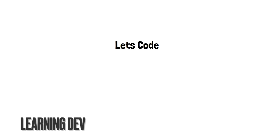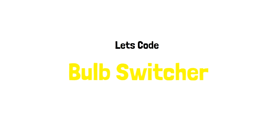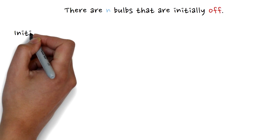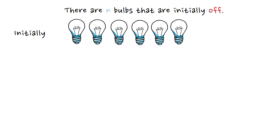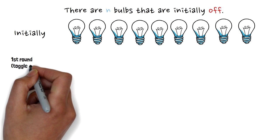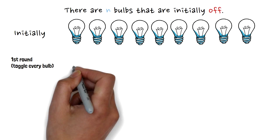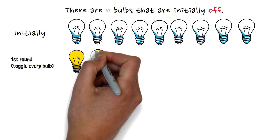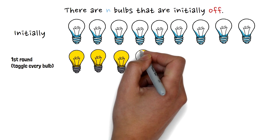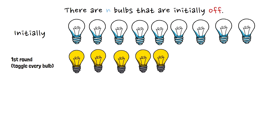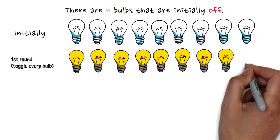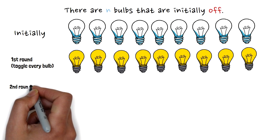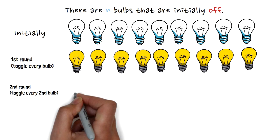The name of the problem is Bulb Switcher, a famous LeetCode problem. There are n bulbs that are initially off. In the first round we have to toggle every bulb — toggling means if the bulb is off we switch it on, and if it's on we switch it off. So after the first round, since all bulbs were off, all bulbs are now switched on.